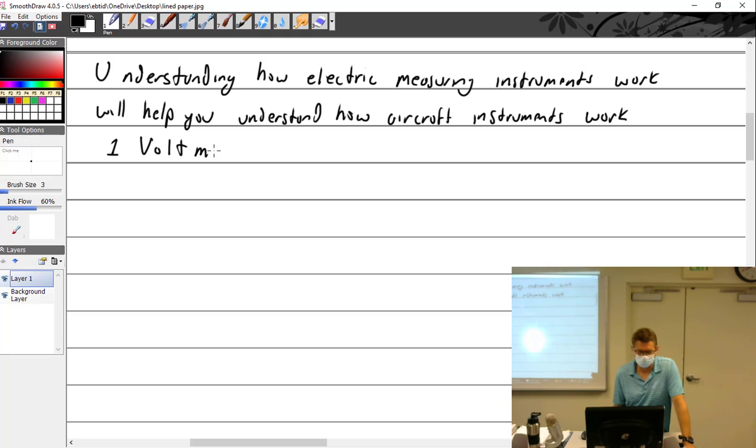All right, we're going to talk about voltmeters. They indicate voltage. There are different types of movements, that's what makes the meter actually move.